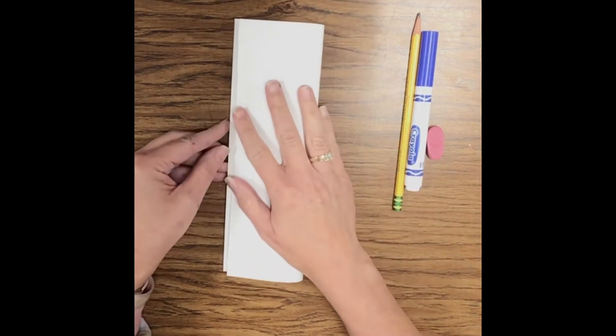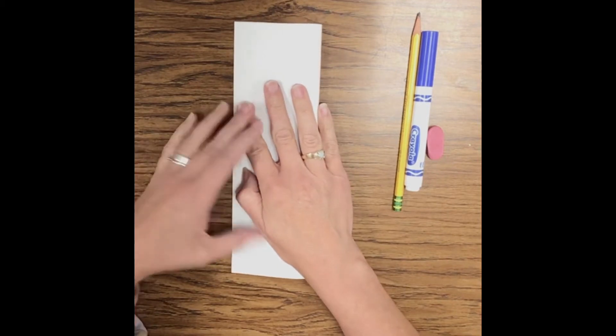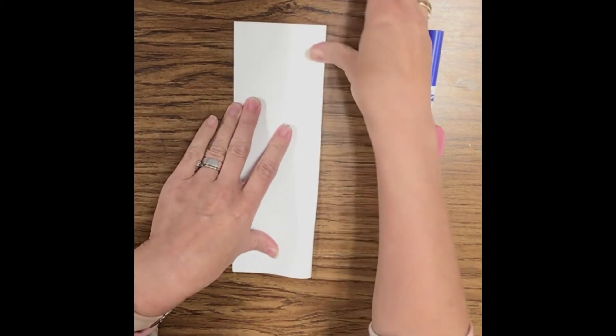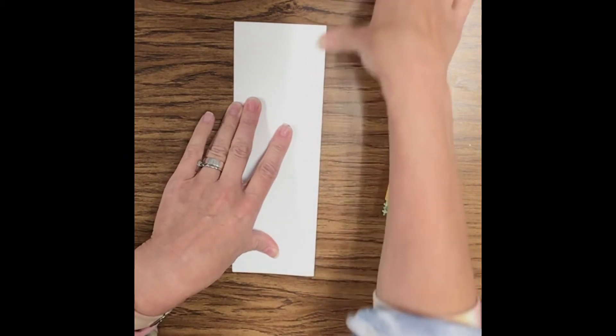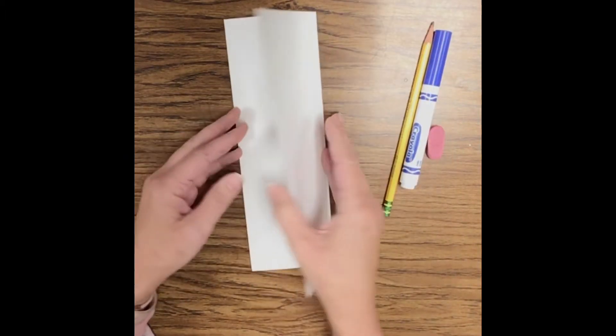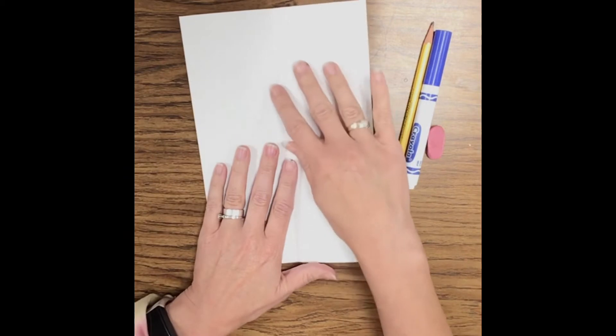So first thing you're gonna do is start off with your paper and we're gonna fold this hot dog so it's nice and skinny. Okay, and then we're gonna open it up and I'm gonna have you turn it one way.